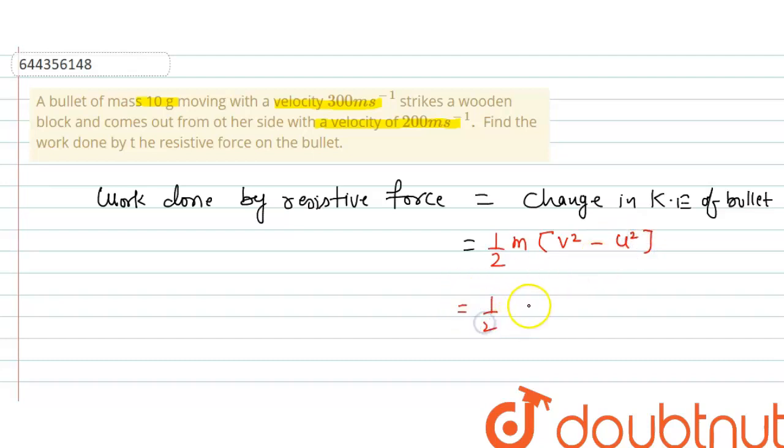So half, mass is given as 10 gram, that means 10 into 10 to the power minus 3, into v square. V means final velocity which is 200, so 200 whole square, minus initial velocity 300 whole square.